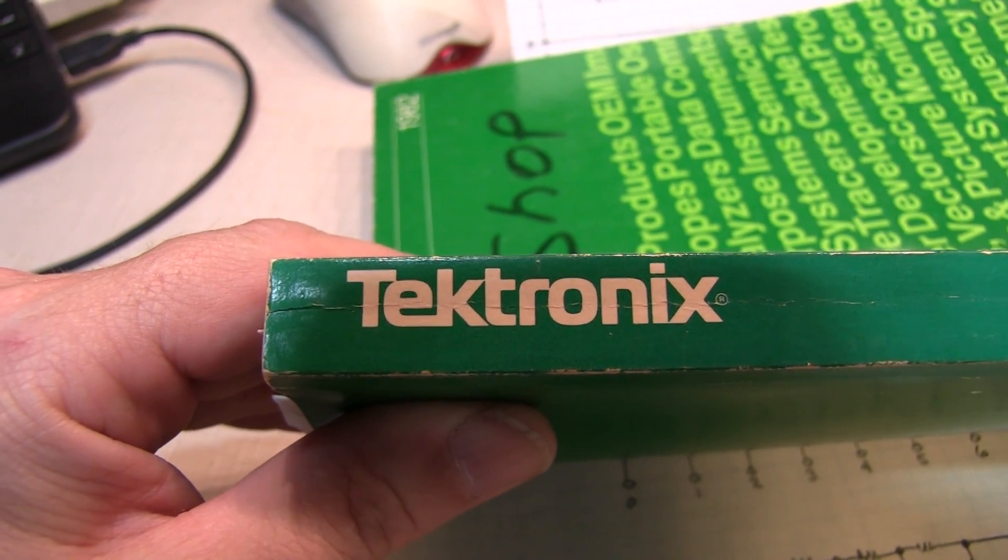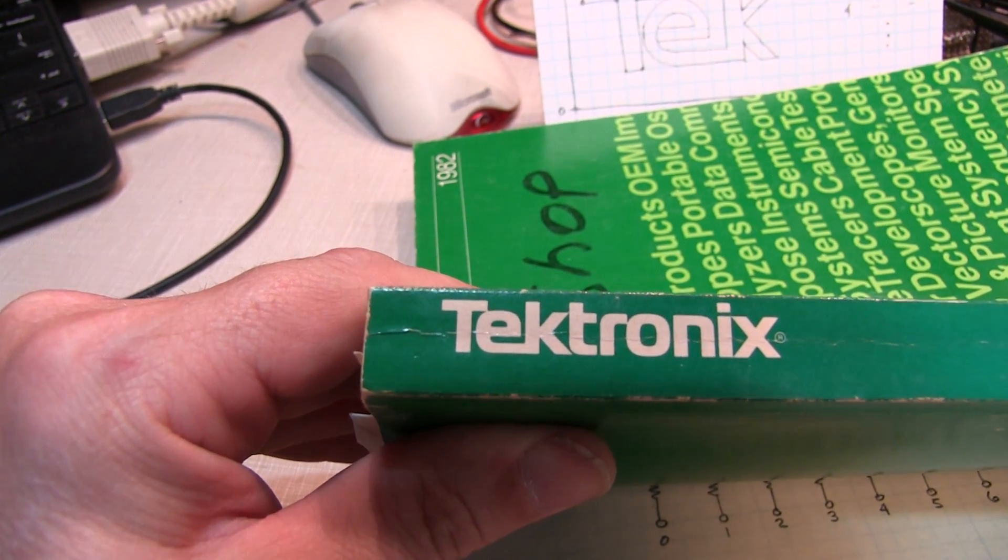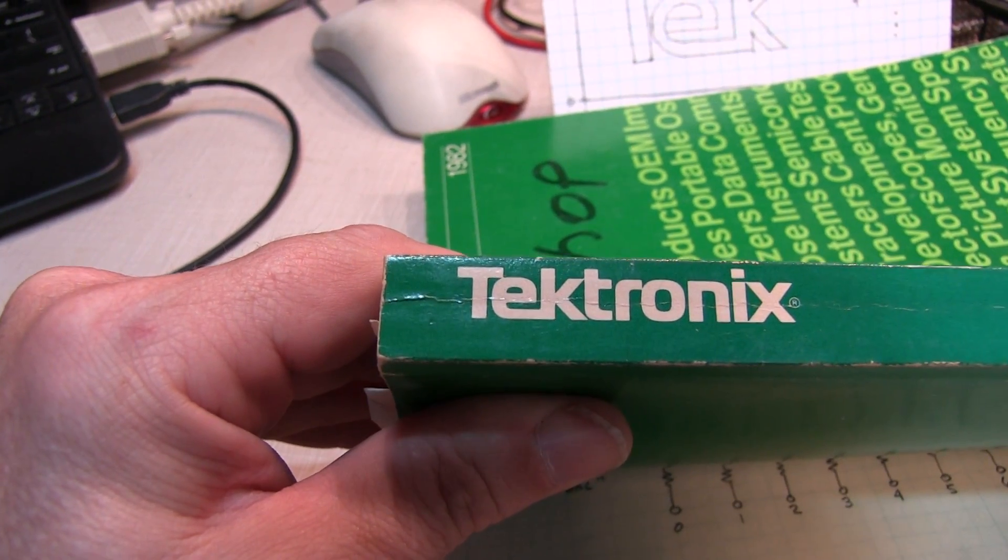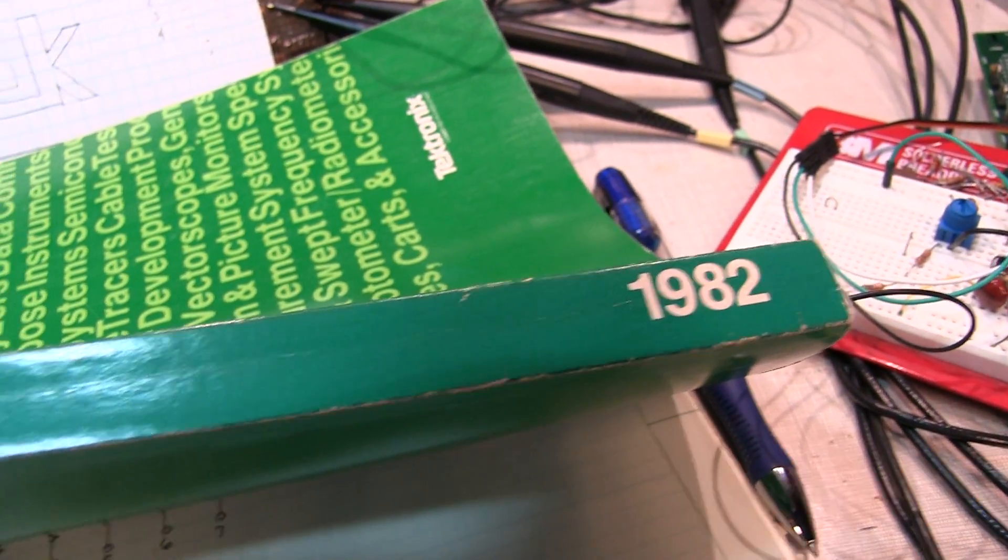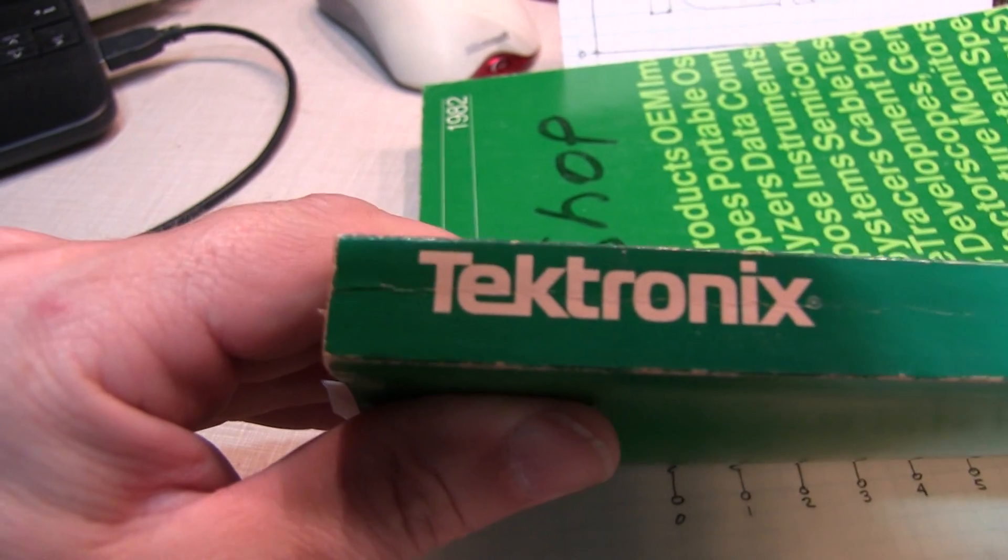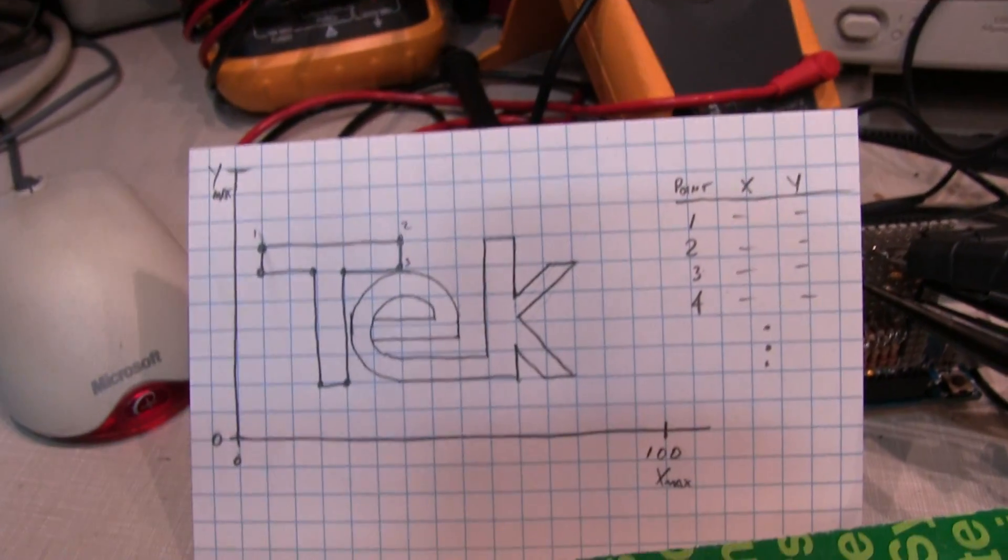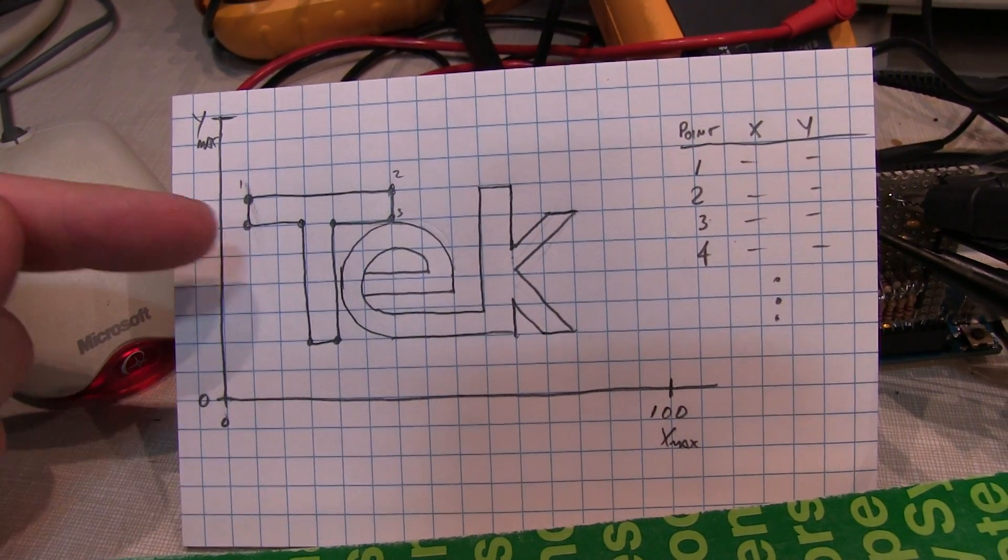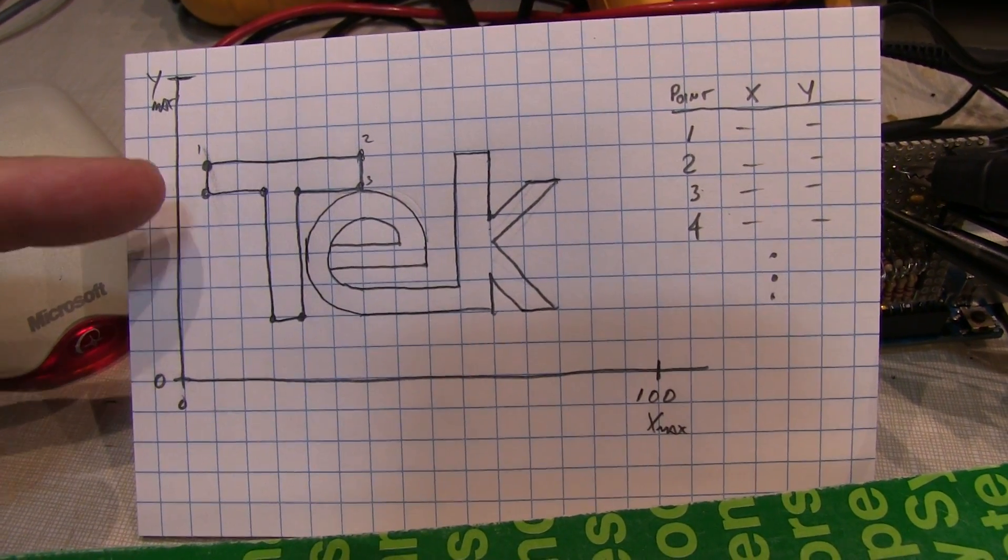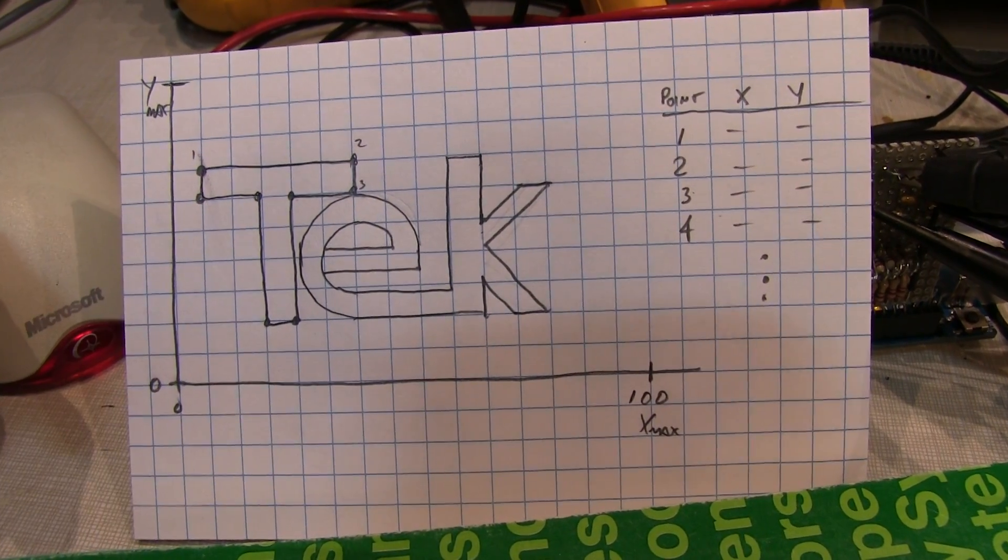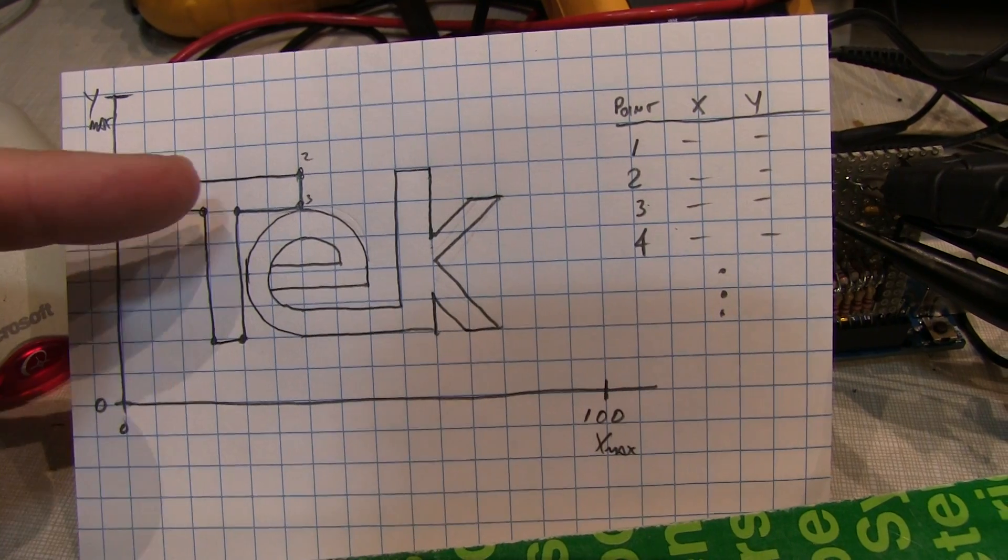So the next part of the process was to essentially give myself the XY coordinates for the first three letters of Tektronix in this logo that was used back in the early 80s. Here's a 1982 catalog from Tektronix. So that process was a matter of simply drawing it out on a piece of paper. This isn't the original one I used. I think I threw that one away. I did that a while ago.